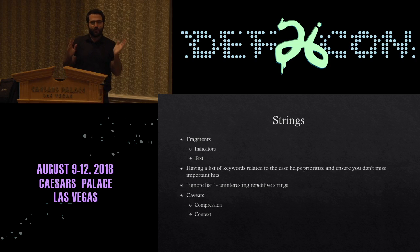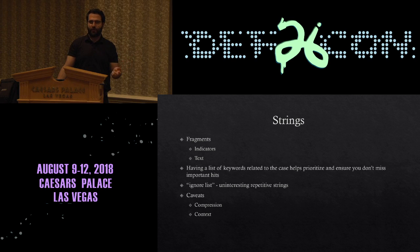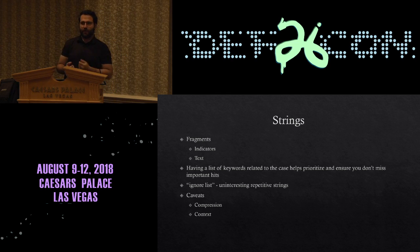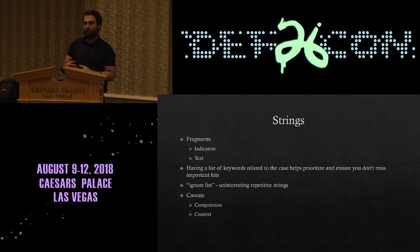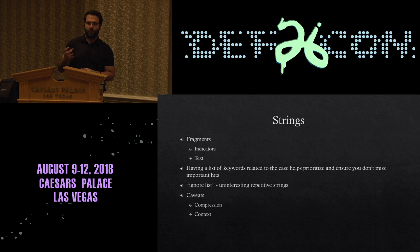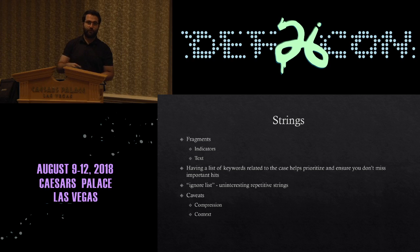Start with the simple stuff: strings. Any IOCs or strings you know you're looking for, you can scan for those — any kind of indicators, URLs, IP addresses, domains, start with those. If you're looking for a specific type of activity like mining, black market activity, or industrial espionage involving competitors, you might want to scan for those. They'll give you a good clue, and you haven't yet parsed anything and don't need any expertise.